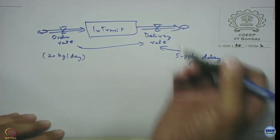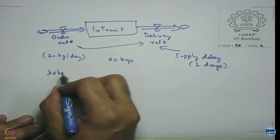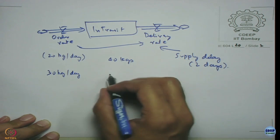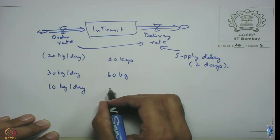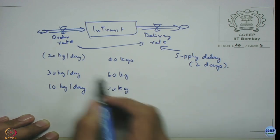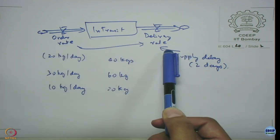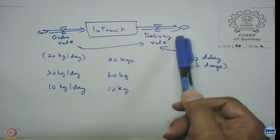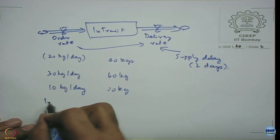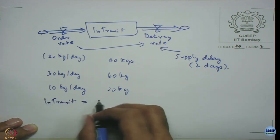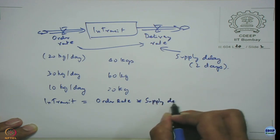40 units. In transit should be equal to 40 kgs. If my order rate became 30 kg per day, then in transit becomes 60. Similarly, if it becomes 10 kg per day, in transit should become 20 kgs. Supply delay does not change because after some point we expect that order rate will equal delivery rate — so whether I call it order rate or delivery rate, it does not matter.